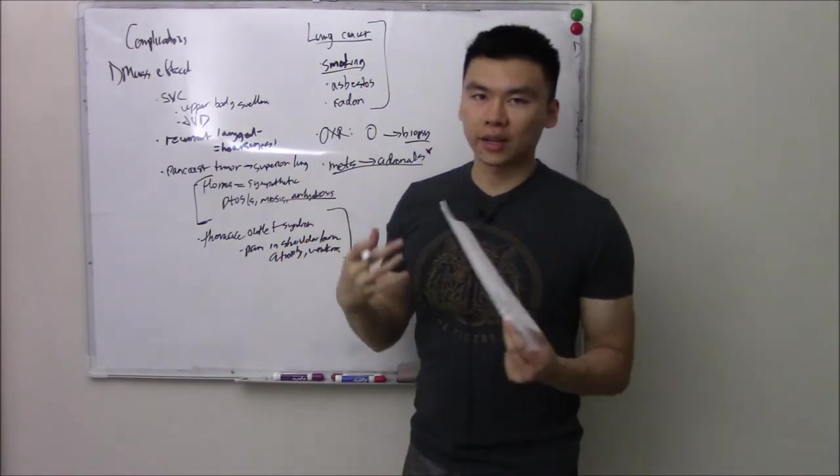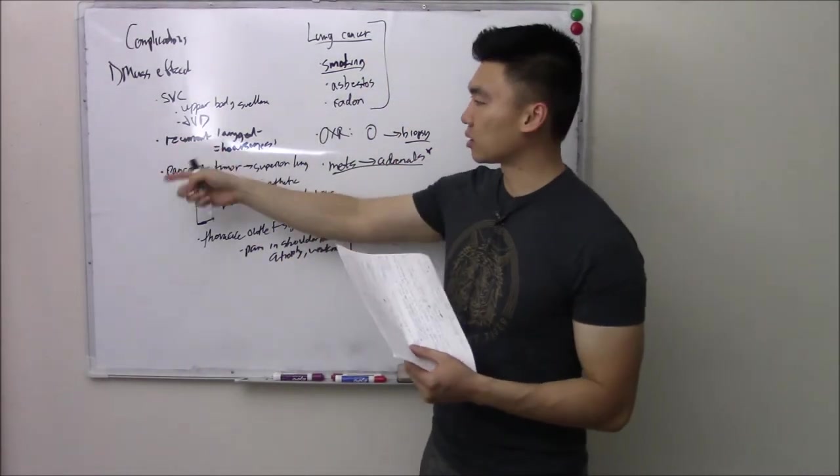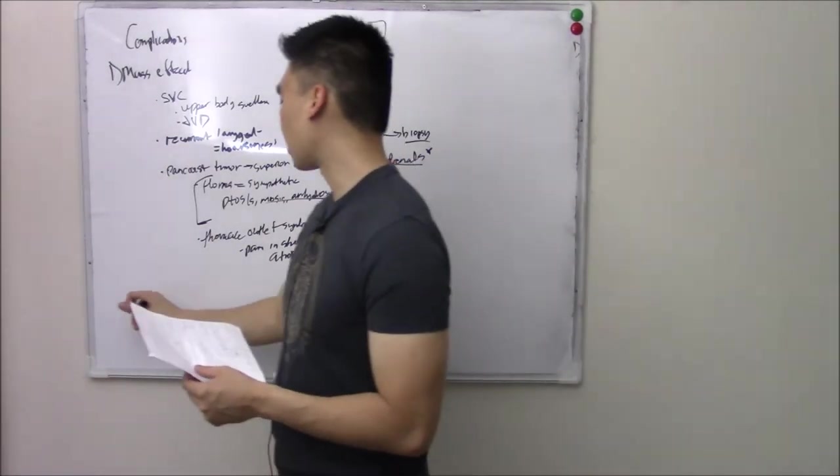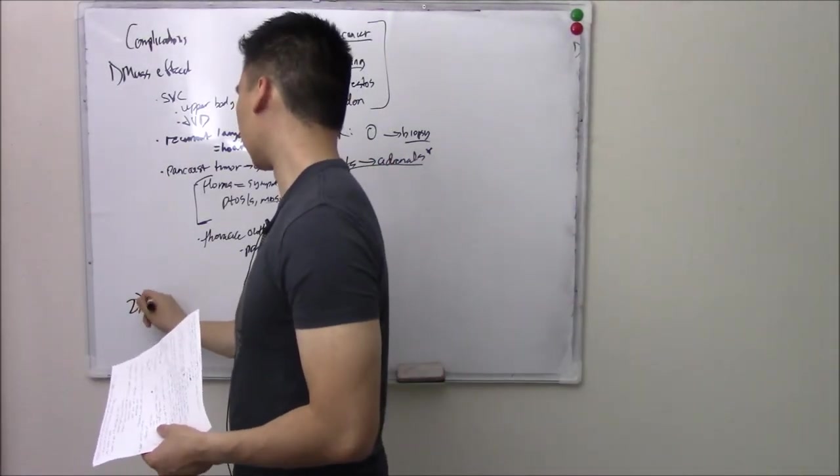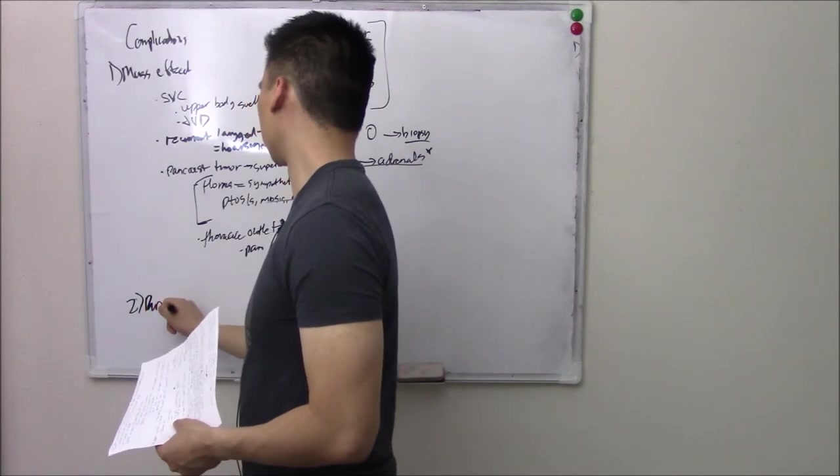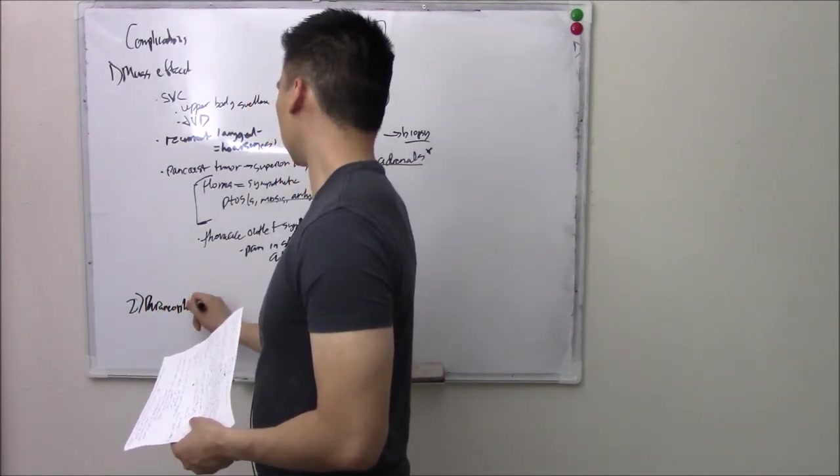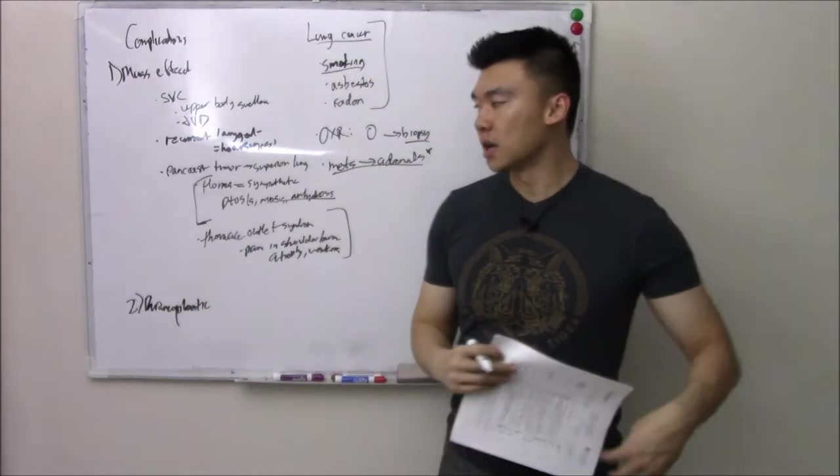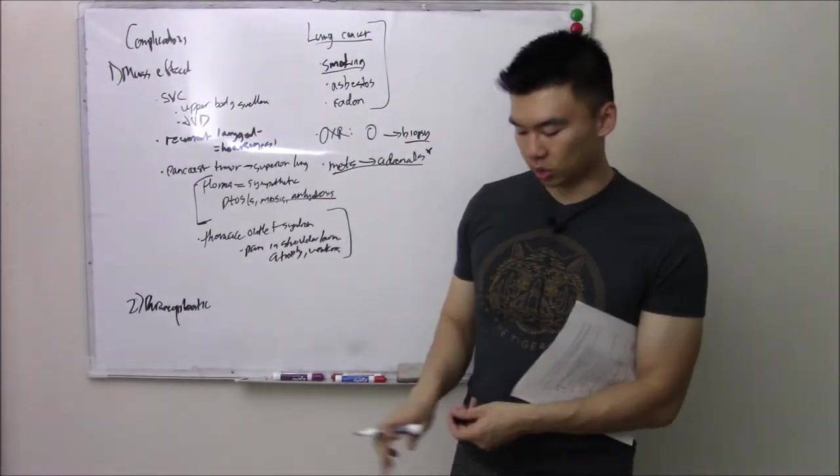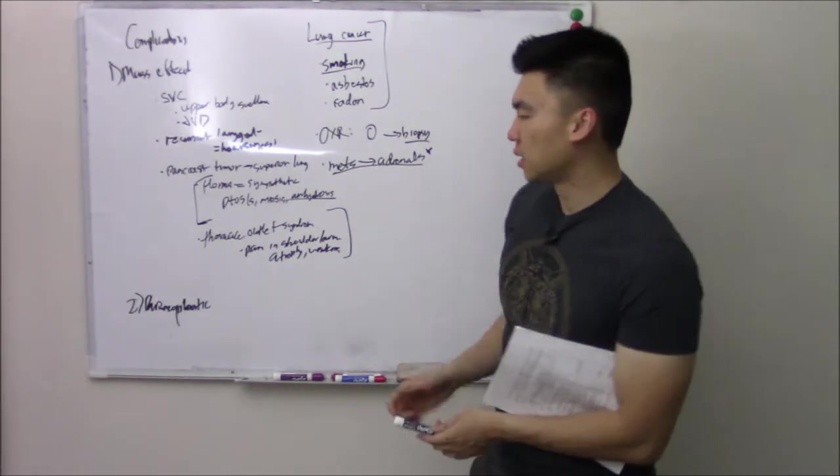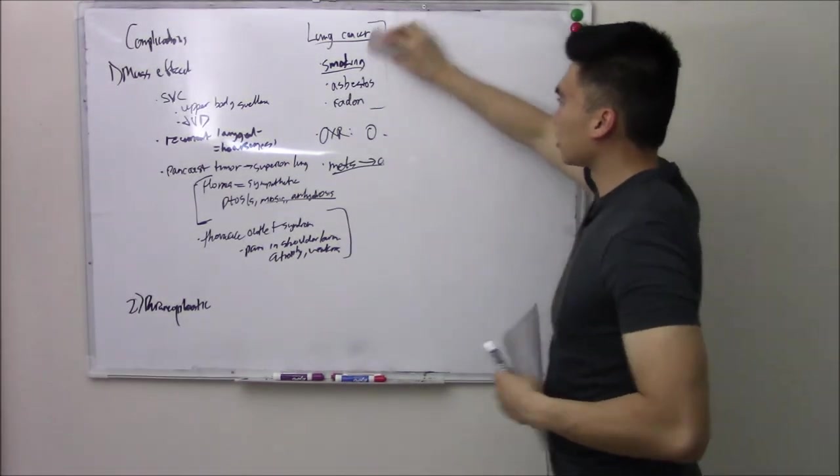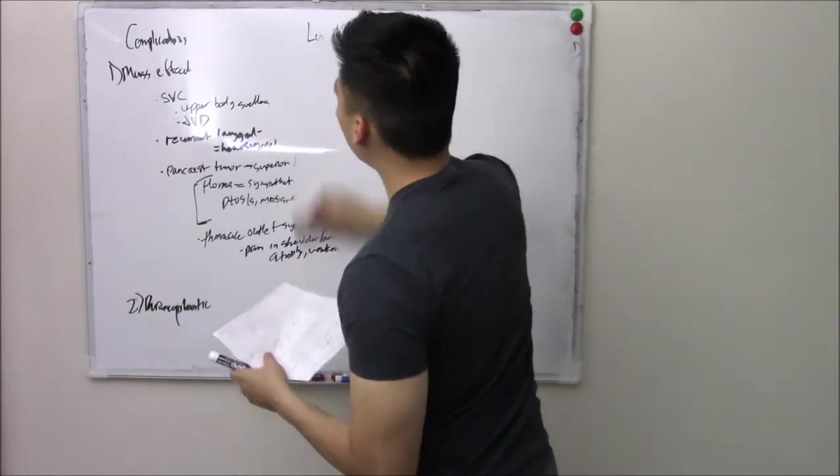So that tumor growing and growing can cause mass effect, can compress on all these things and cause secondary complications. There's one more secondary complication, and that's just paraneoplastic syndromes. These mutated cells love to release cytokines, love to release hormones, and can cause paraneoplastic syndromes. And we'll talk about the specific ones in a bit. That is the overview of lung cancer.